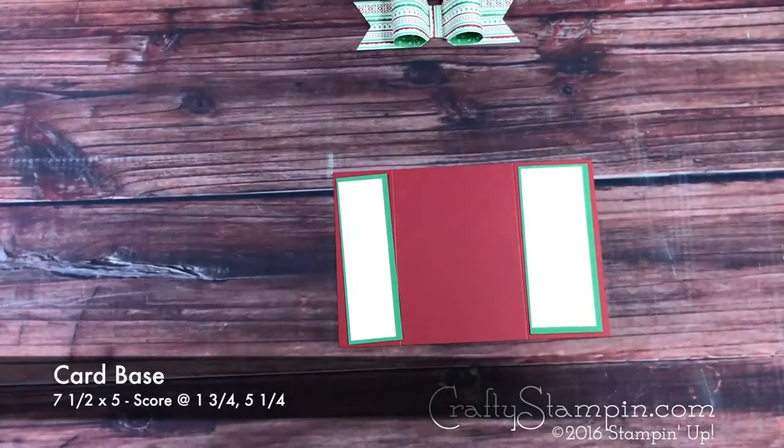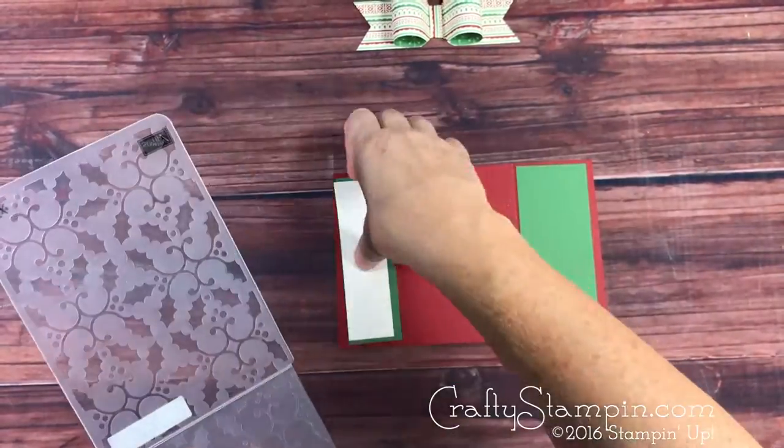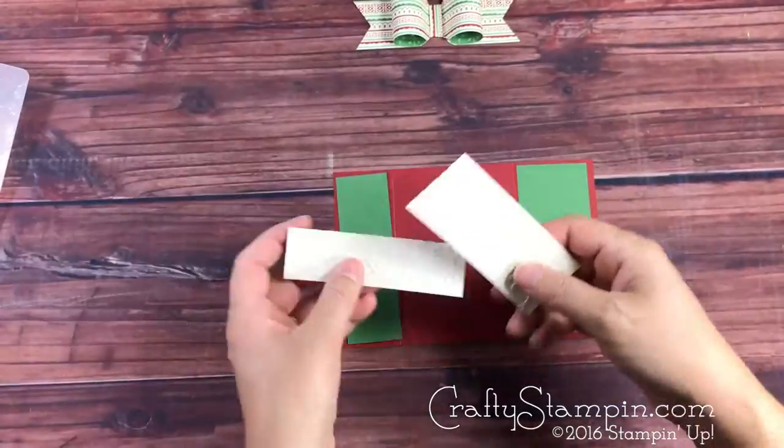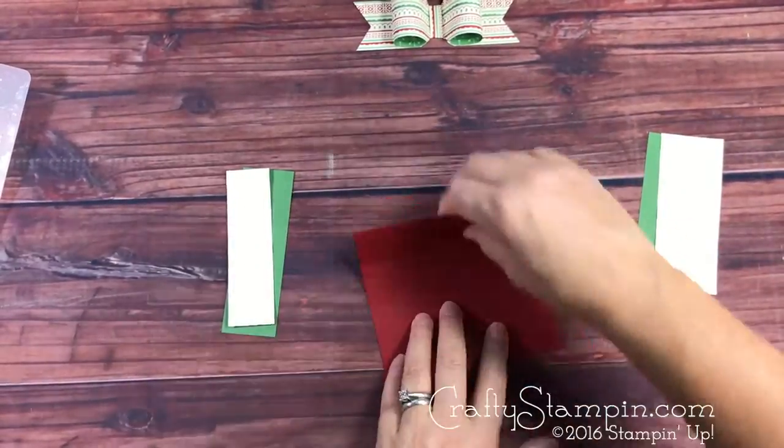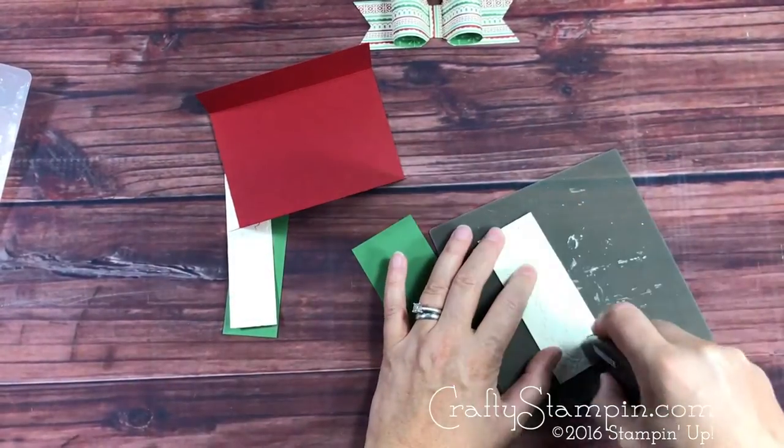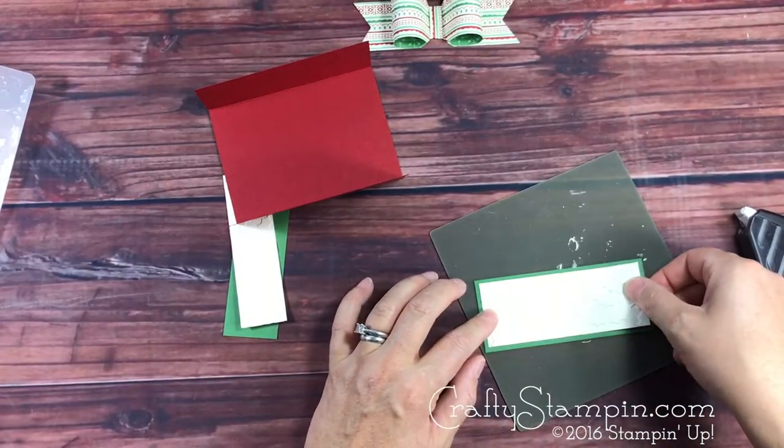Now we're going to work on the card base. I chose to use embossed for my decorative panels. You can easily change this up and use DSP on the front for your decorative panels. This is a very versatile card that you can make.